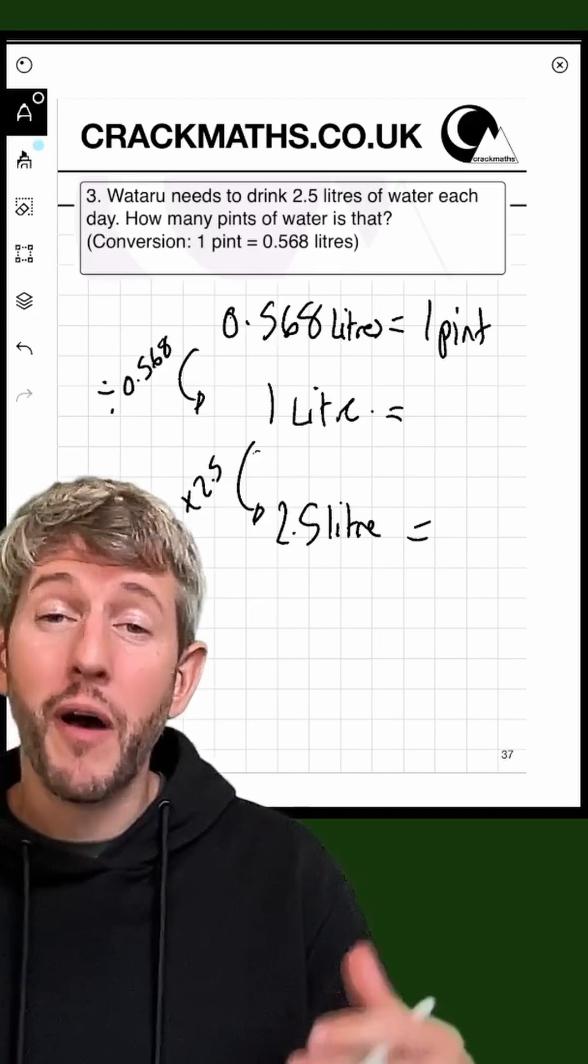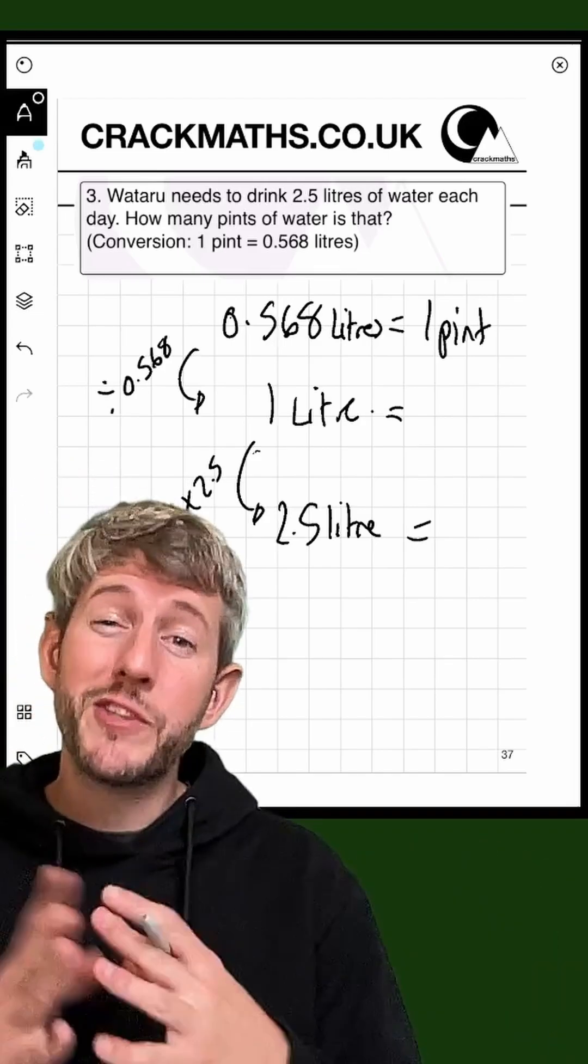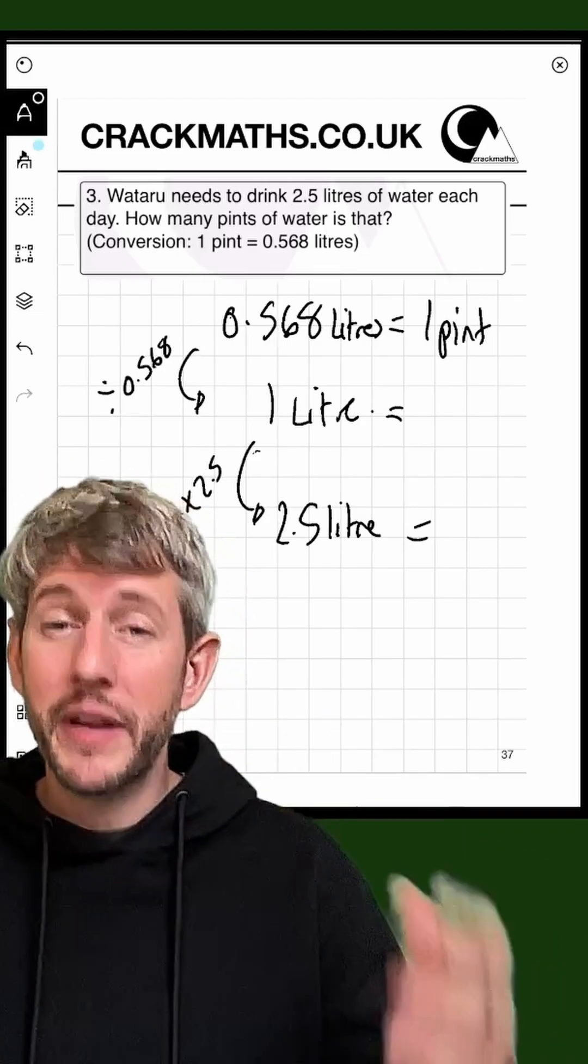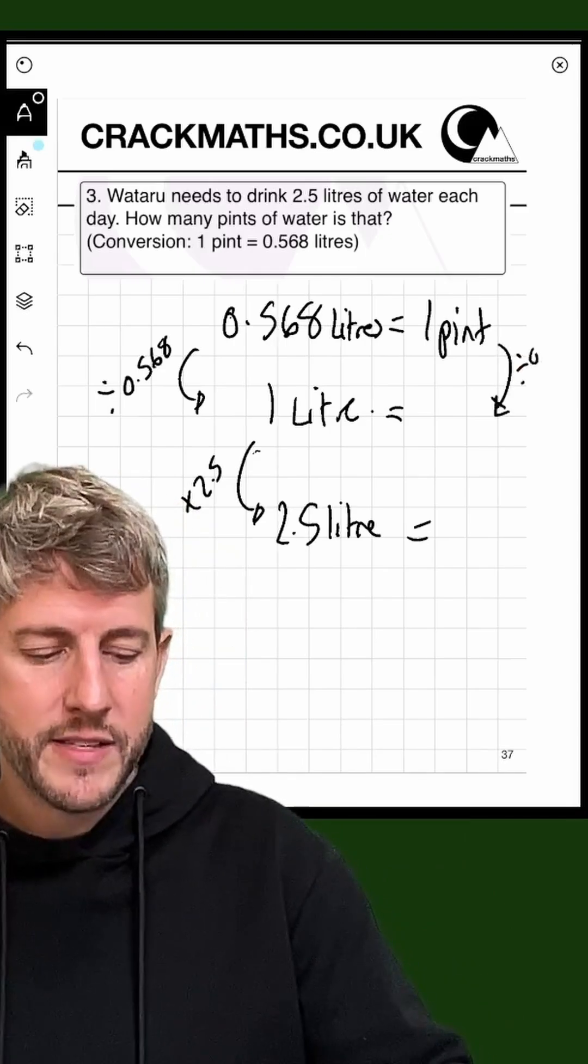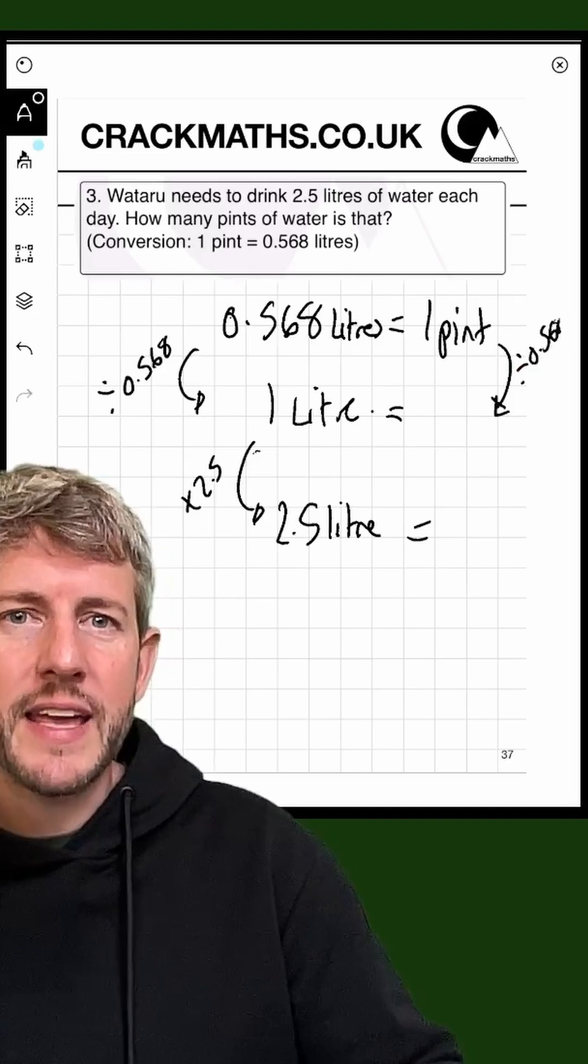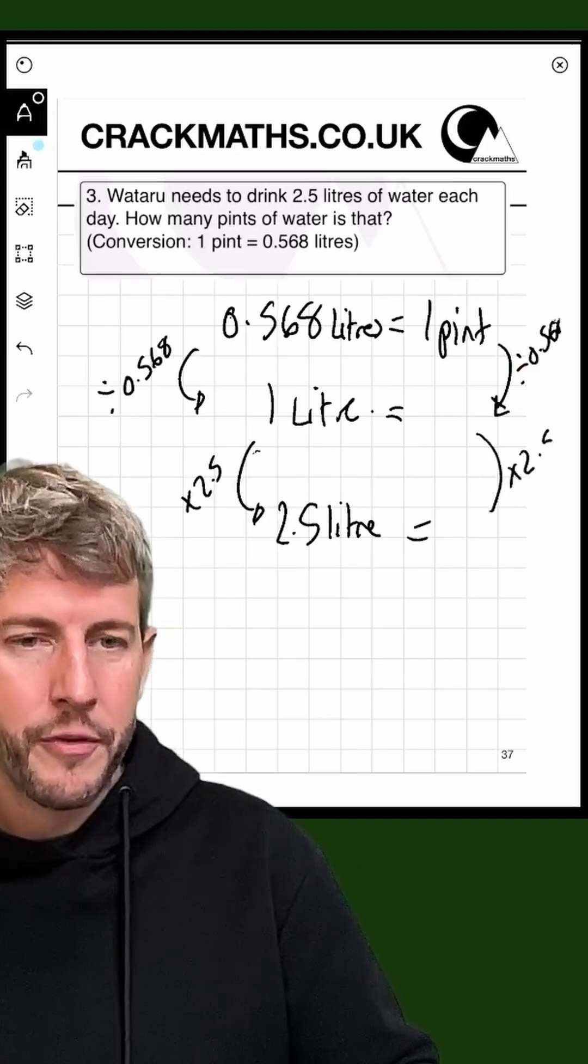Now remember, different units of volume are directly proportional because we're just talking about the same amount of stuff, but in a different way. So I'm just going to do the same things over here. Divide by 0.568 and then multiply by 2.5.